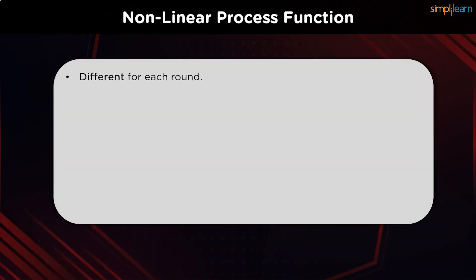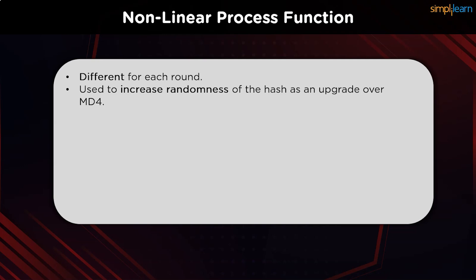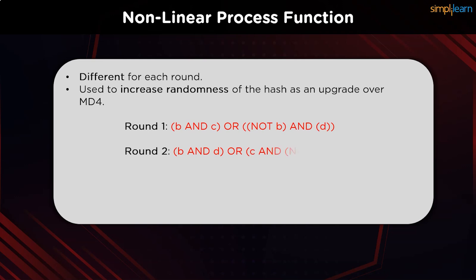Regarding the non-linear process mentioned in the first step, the formula changes for each round being run. This is done to maintain the computational complexity of the algorithm and to increase the randomness of the procedure. The formula for each of the four rounds uses the same parameters — B, C, and D — to generate a single output. The formulas being used are shown on the screen.